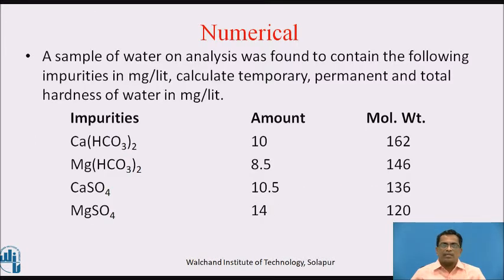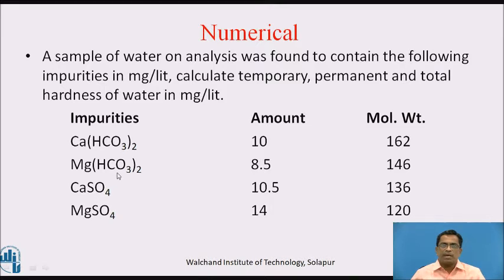First numerical: A sample of water on analysis was found to contain the following impurities in milligrams per litre. Calculate temporary, permanent, and total hardness of water. Calcium bicarbonate: 10 mg/L, magnesium bicarbonate: 8.5 mg/L, calcium sulphate: 10.5 mg/L, and magnesium sulphate: 14 mg/L. Molecular weights are also given.